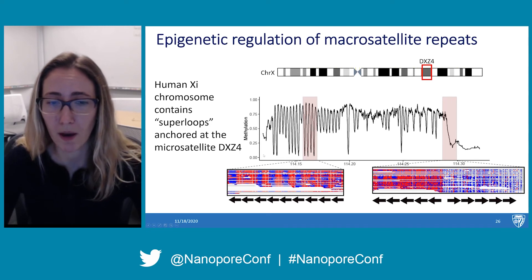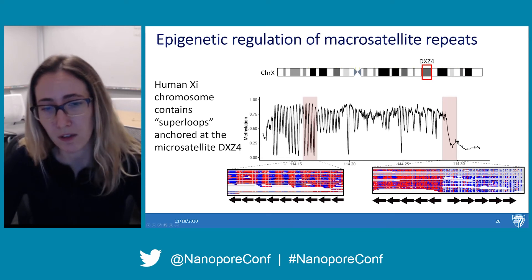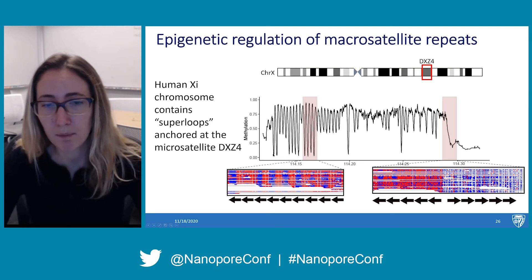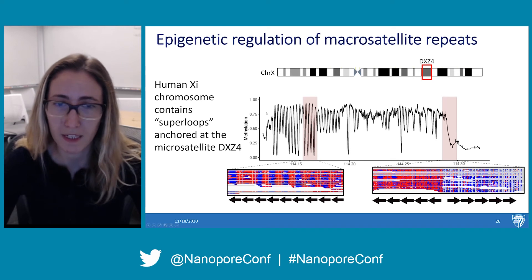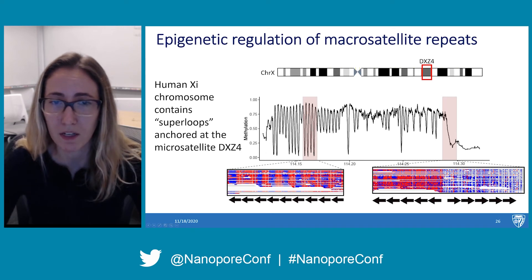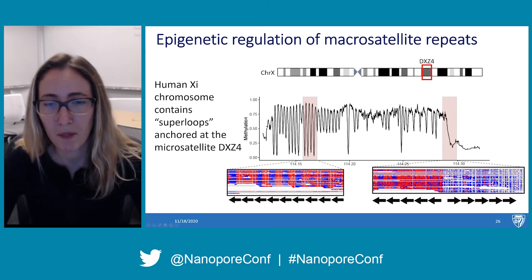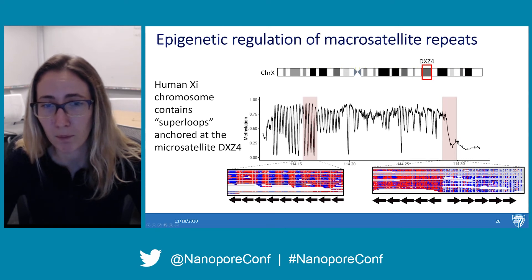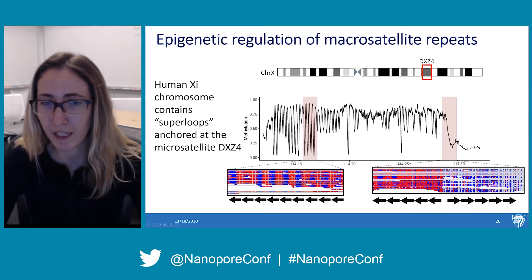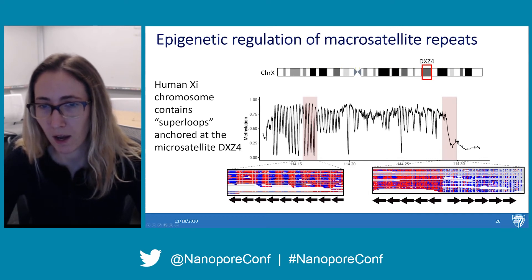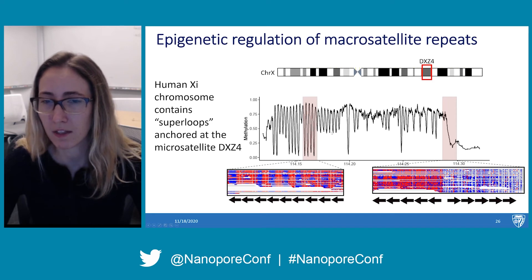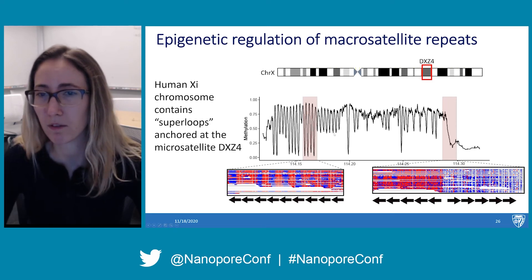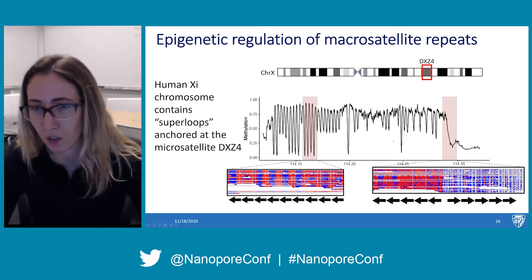We also note that within the array, there are monomers that are completely methylated and completely unmethylated, but also monomers where methylation only ranges from 0.5 to 1. In this hypomethylated region, only about half of the reads show this hypomethylation, leading us to believe there could be some allele-specific events occurring.